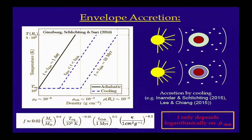What happens next is you wait a little bit, and the envelope you accreted will cool and contract. As it contracts, you create extra space in the outer regions of the Bondi radius and more gas can flow in — so you start accreting additional material. You can think of this accretion process as cooling-limited: how much gas you accrete is regulated by how quickly the envelope you already have can cool and contract so you can accrete additional material from the disk.